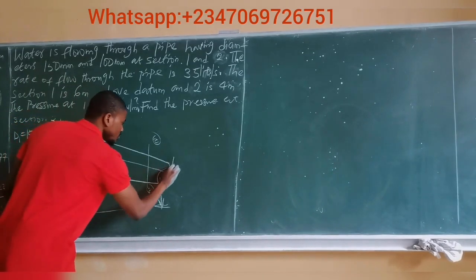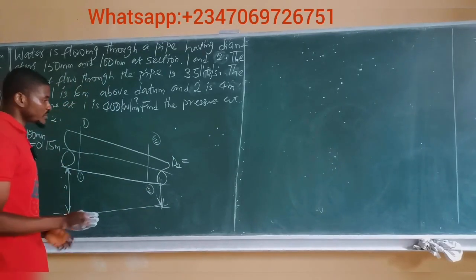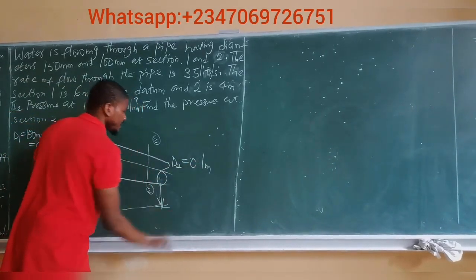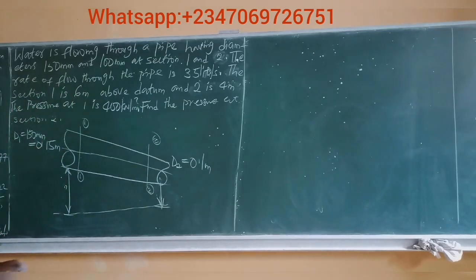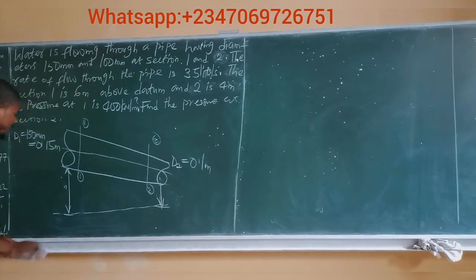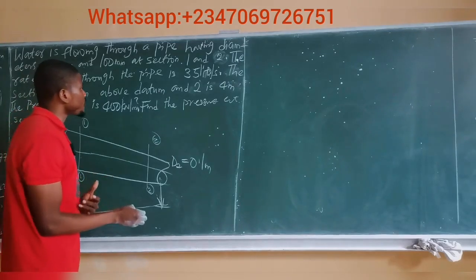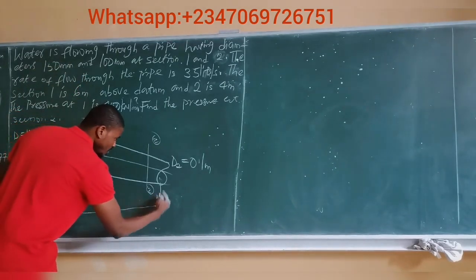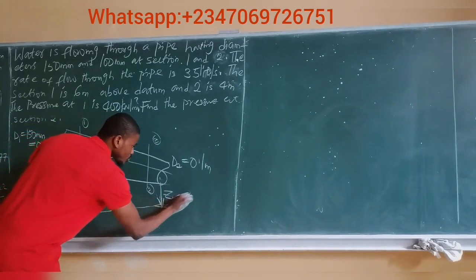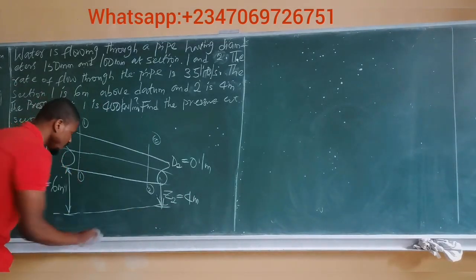Diameter 2, D2, is given as 100 mm. Divide 100 mm by 1000 to convert to meters — you get 0.1 meters. The question says section 1 is 6 meters above the datum line, so Z1 is equal to 6 meters. And section 2 is 4 meters above the datum line, so Z2 is equal to 4 meters.